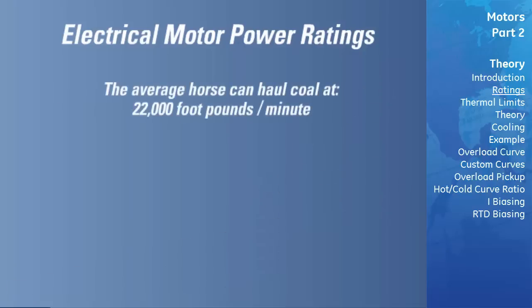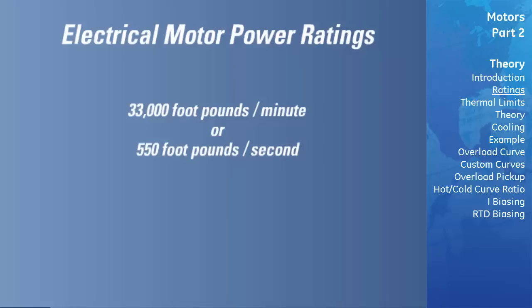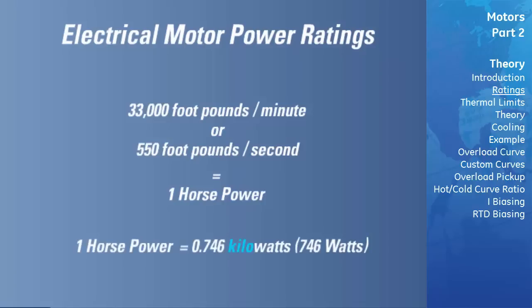Watt determined that the average horse could haul coal at a rate of 22,000 foot-pounds per minute. He then arbitrarily raised this figure by a factor of one-half to 33,000 foot-pounds per minute, or 550 foot-pounds per second, and established this as one horsepower. Horsepower has remained the standard unit of power rating for electrical motors in North America, while in Europe the kilowatt is standard. One horsepower equals 746 watts, or 0.746 kilowatts. To convert kilowatts to horsepower, multiply by 1.341.